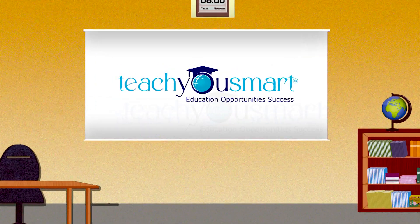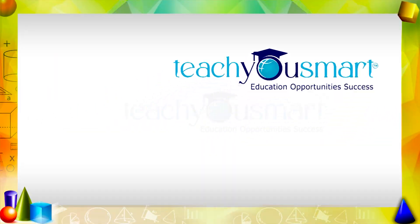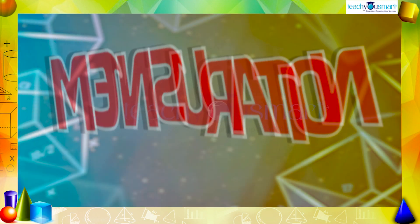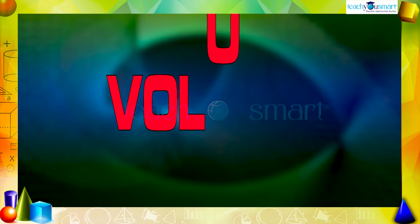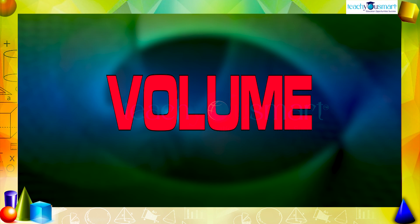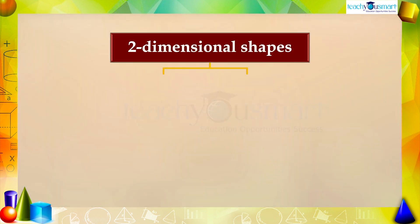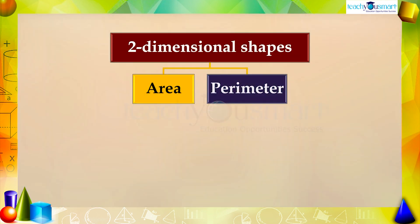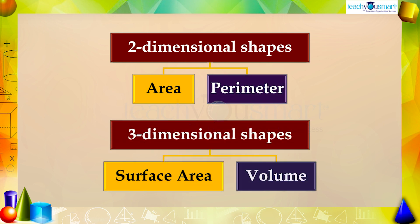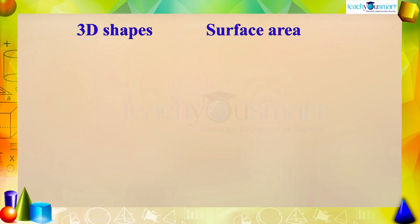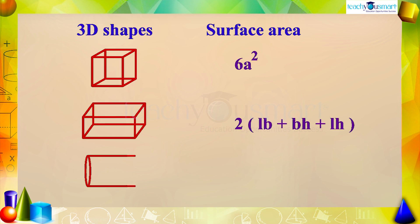Hello students, welcome to Teach You Smart. Let's continue our journey through mensuration. Today we are going to open up a new topic: volume. As we all know, two-dimensional shapes have area and perimeter, while three-dimensional shapes have surface area and volume. In the earlier session we discussed the surface area of some 3D shapes: cubes, cuboid, and cylinder.